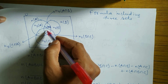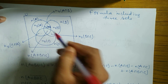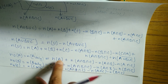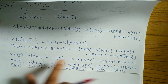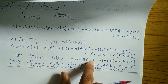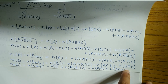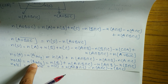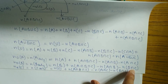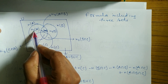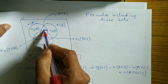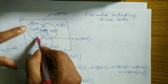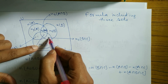The trick to remember: for only A, keep n(A) and add n(A∩B∩C), then subtract n(A∩B) and n(A∩C). For only B, subtract n(A∩B) and n(B∩C). For only C, subtract n(A∩C) and n(B∩C). You subtract the two pairwise intersections involving that set.